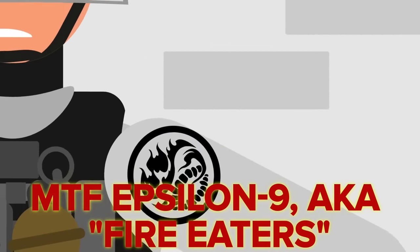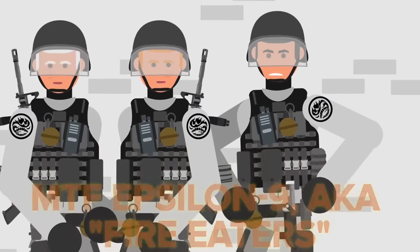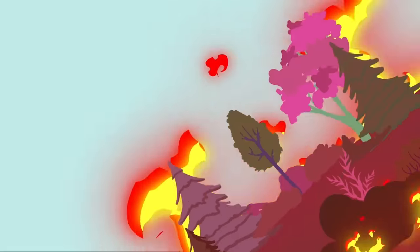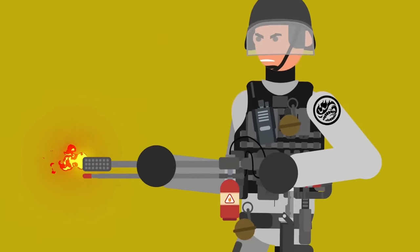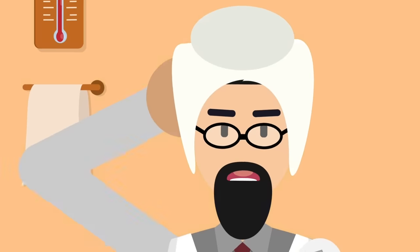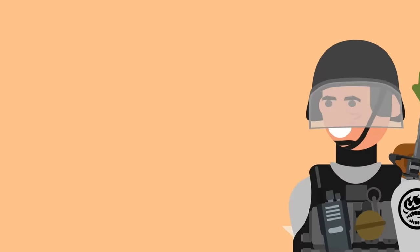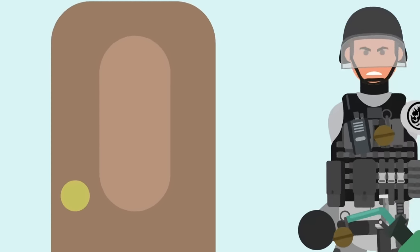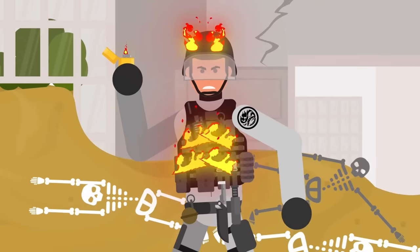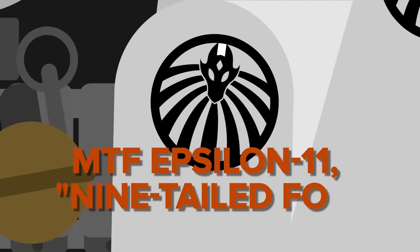MTF Epsilon-9, aka Fire Eaters, are the Foundation's resident pyromaniacs. They're the ones sent into missions involving extremely high temperature environments, and they're also highly skilled in the use of powerful incendiary weapons. If the Foundation needs to burn or avoid getting burned, the Fire Eaters are the ones for the job. Their vital skills assisted in containing SCP-165, massive colonies of carnivorous, parasitic mites that eat prey to the bone.